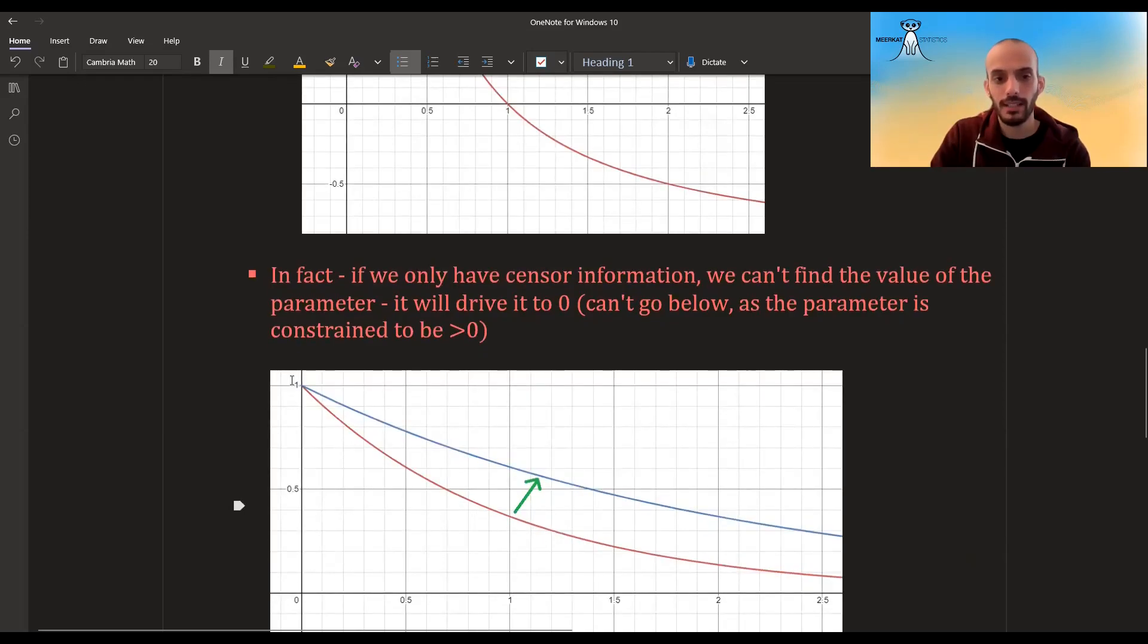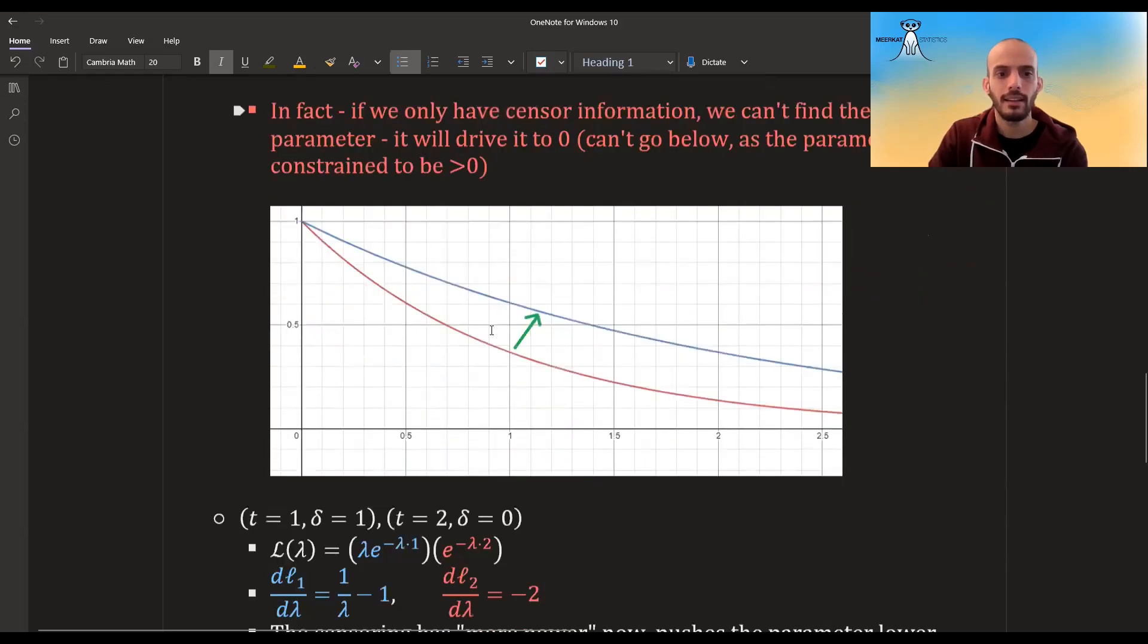But since we had this, look what happened. It kind of increased the survival. So if we only had an event at one, this would be the survival curve. But since we also have a censored observation at one, look, it pushed the survival a bit higher, a bit further.